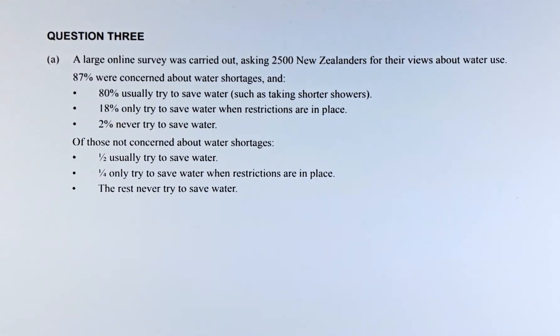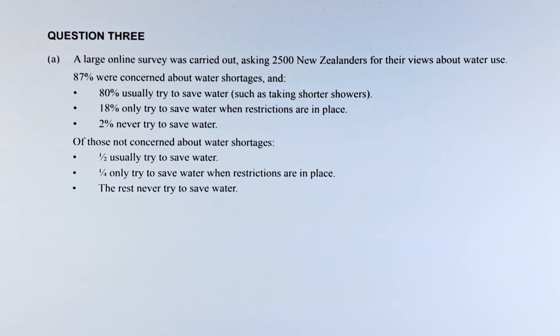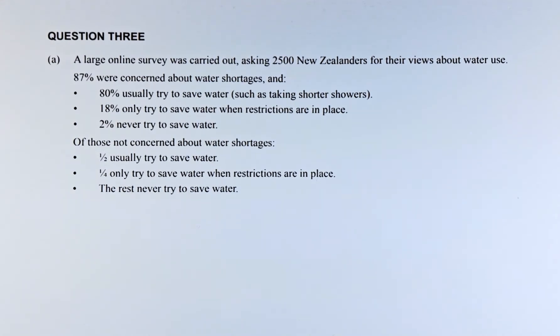A large online survey was carried out asking 2,500 New Zealanders on their views about water use. 87% were concerned about water shortage and of the 87%, 80% usually try to save water by taking shorter showers, 18% only try to save water when restrictions are in place and 2% never try to save any water.